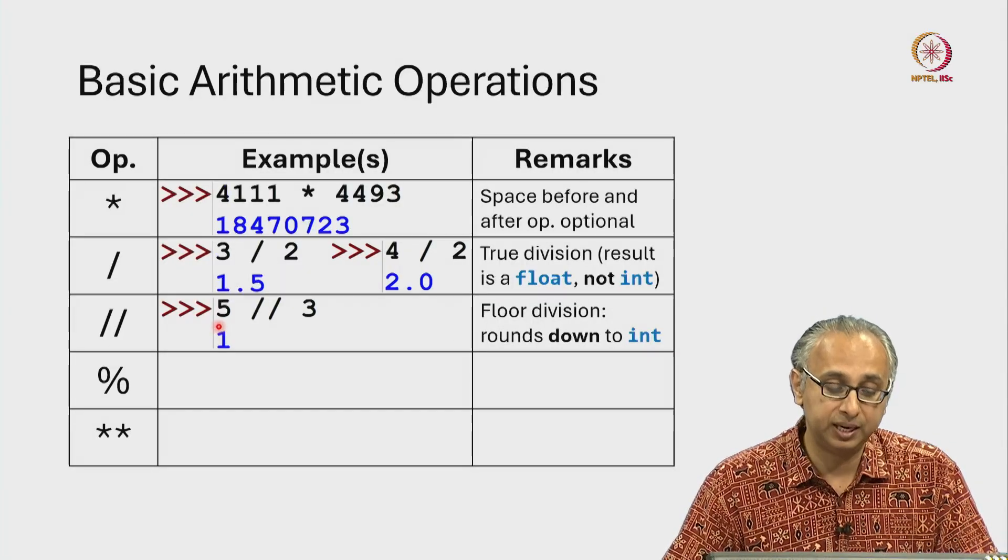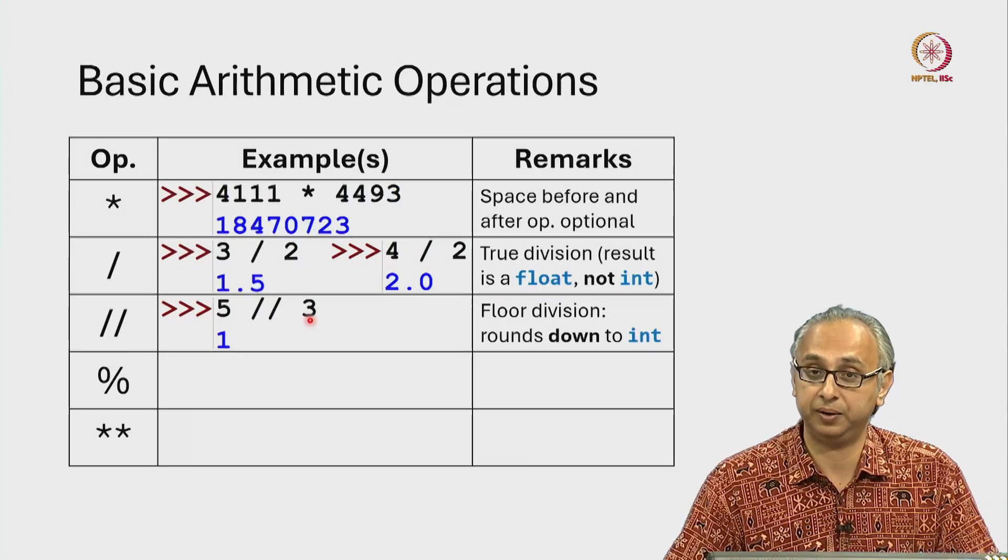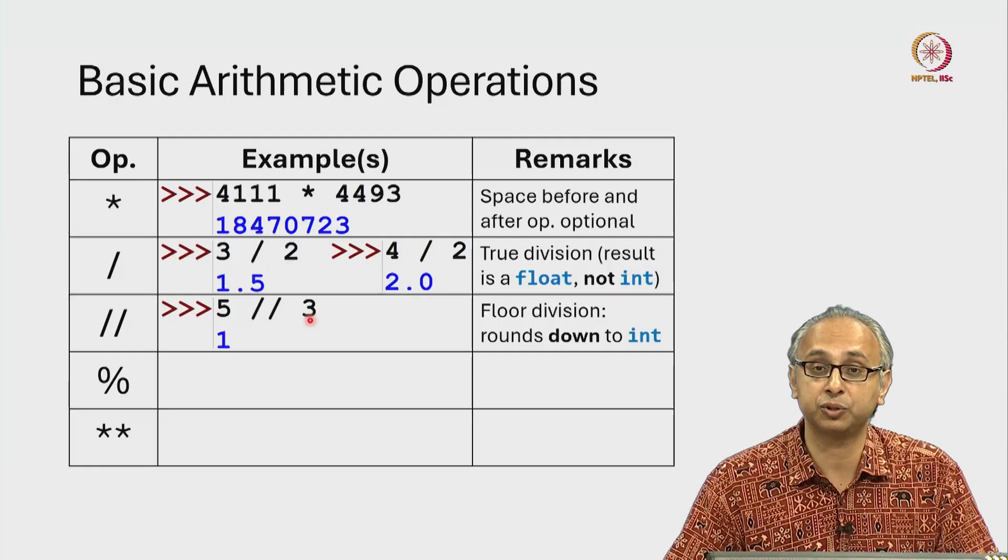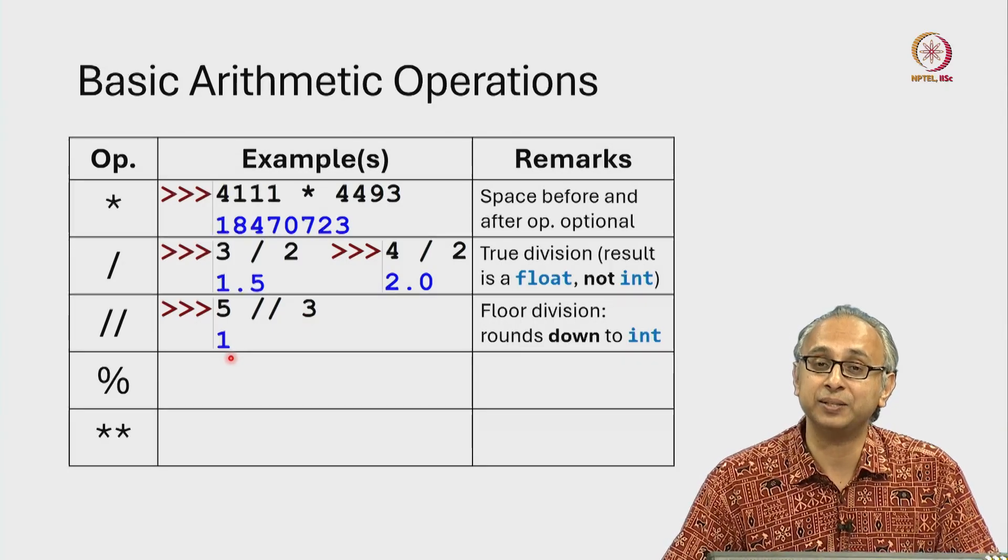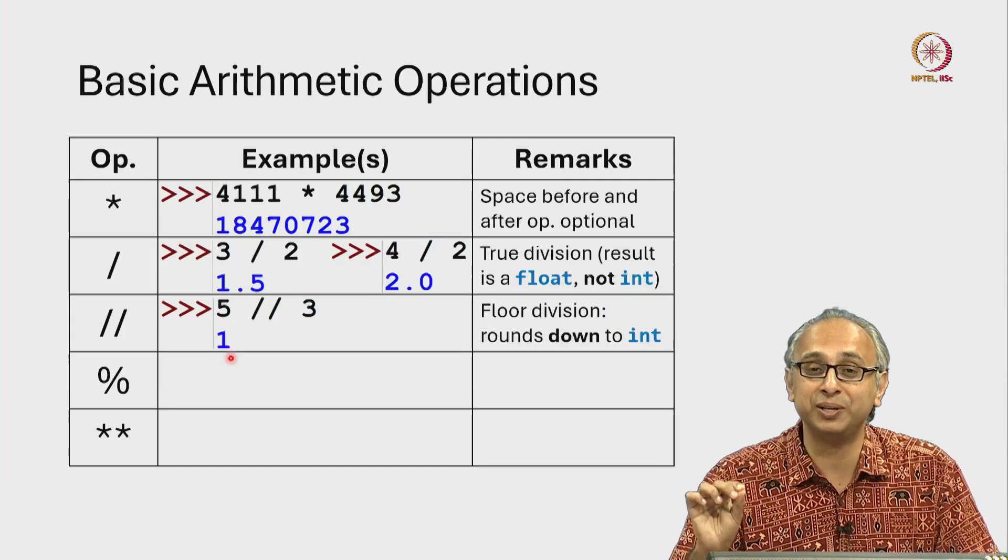So in this case you observe that the inputs are integers, the arguments to this operation are integers and the answer is also an int, it's not 1.0.